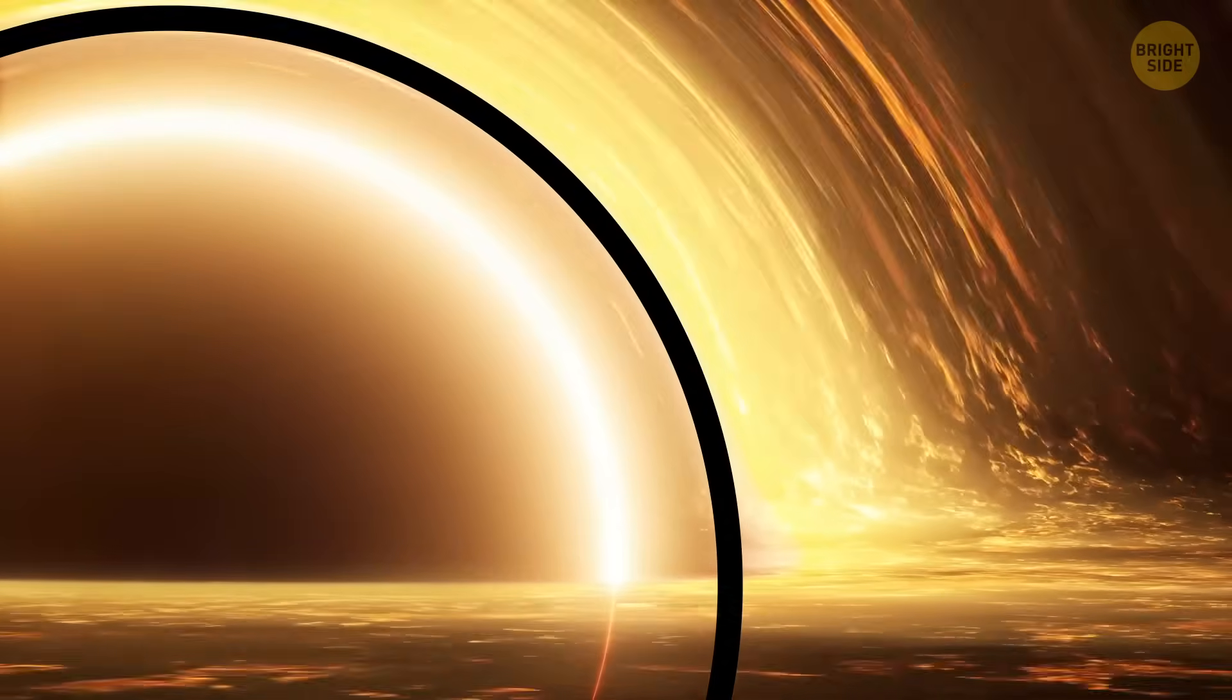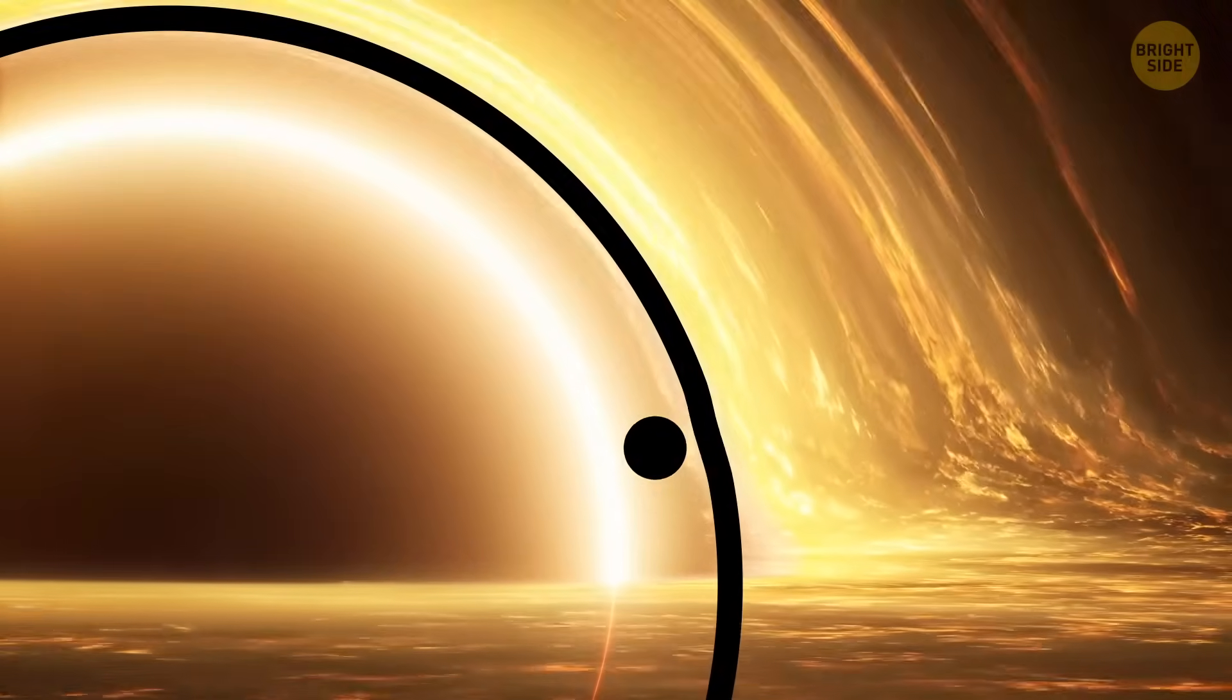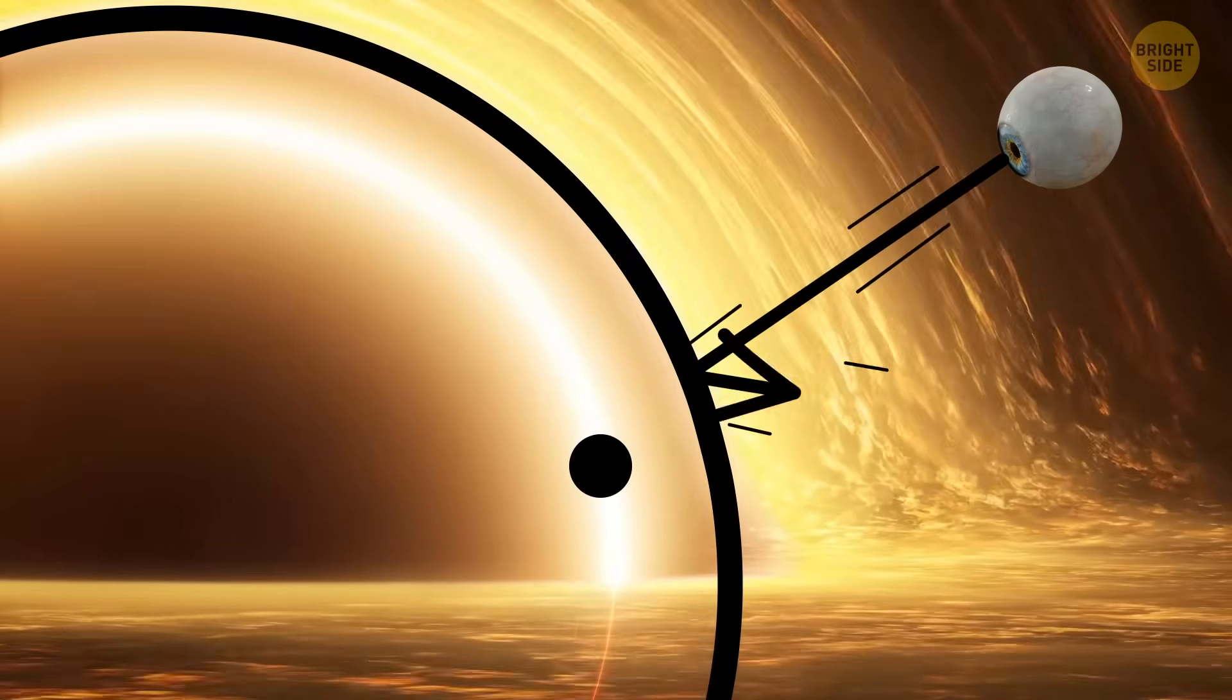A black hole has an event horizon, a point of no return. Once you cross it, you're gone. A white hole has the opposite. Its edge is a no-entry zone. Nothing from the outside can ever get in.